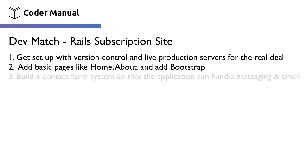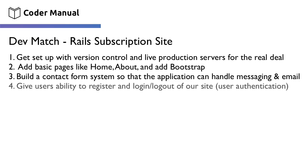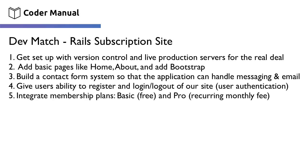Next, we'll get experience building a contact form system so that users can send messages through your application and so that your application can send email notifications back out to anyone. After that, we'll add the ability for users to register or sign up for accounts as well as login and logout — which is what we call user authentication. Then we'll integrate the membership plans: a free basic plan, and a pro plan where users can pay a monthly fee at a price that we set.